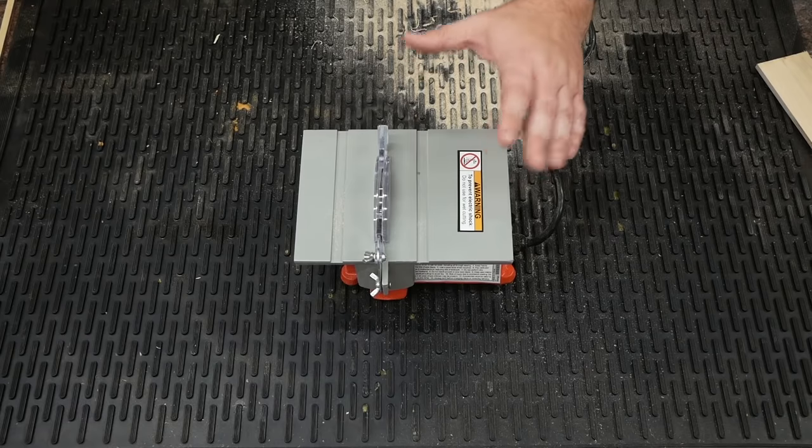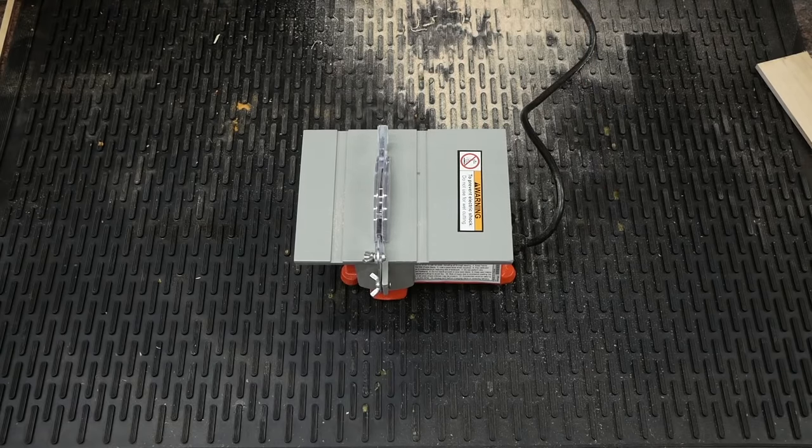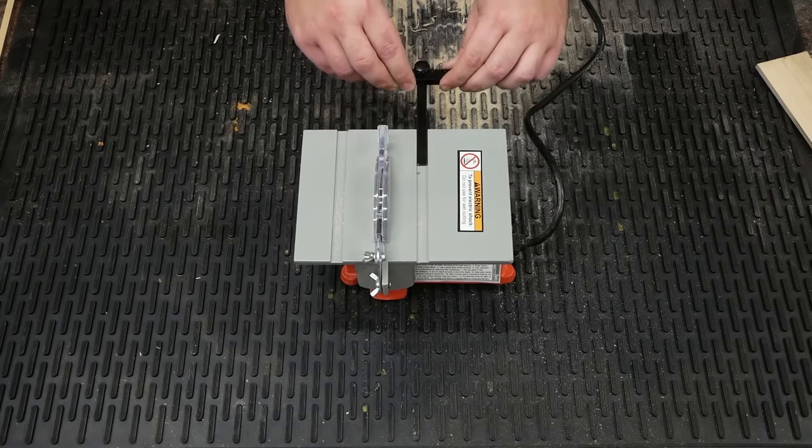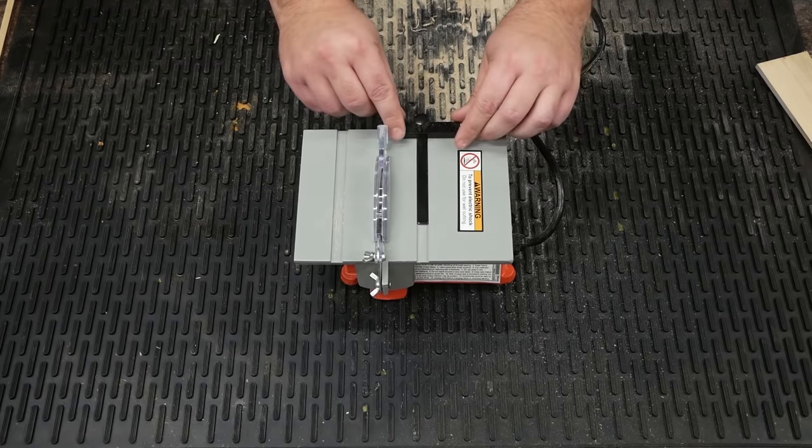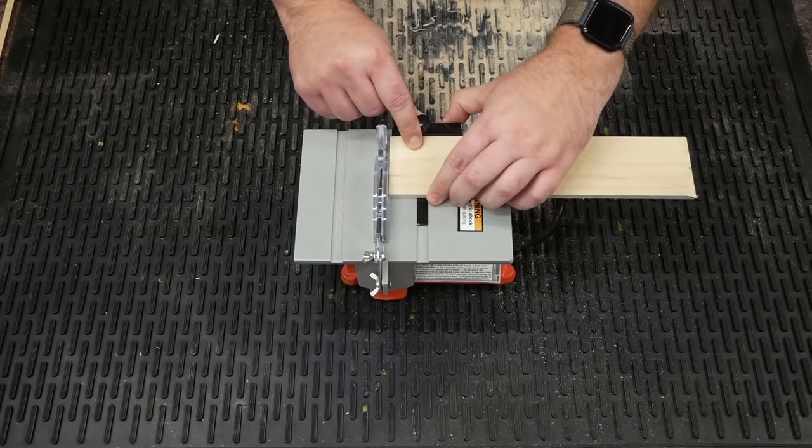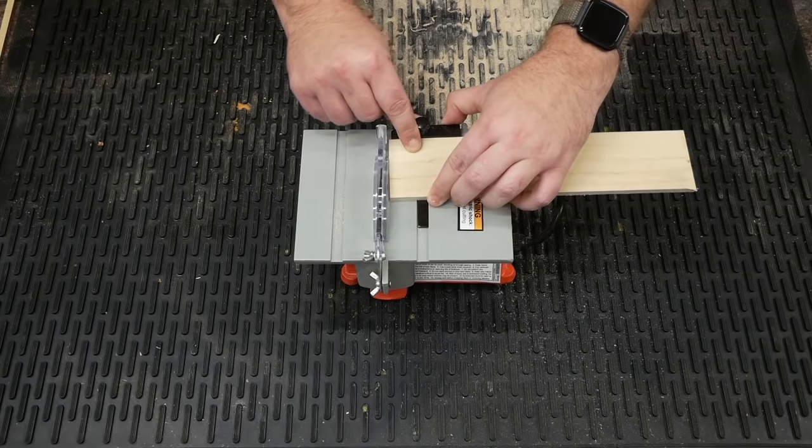It did not come with a fence whatsoever, but it did come with—you ready for this?—a miter gauge. It's not a very good miter gauge because, if you need to see how bad that is, here's a piece of wood. I would argue that's completely useless.